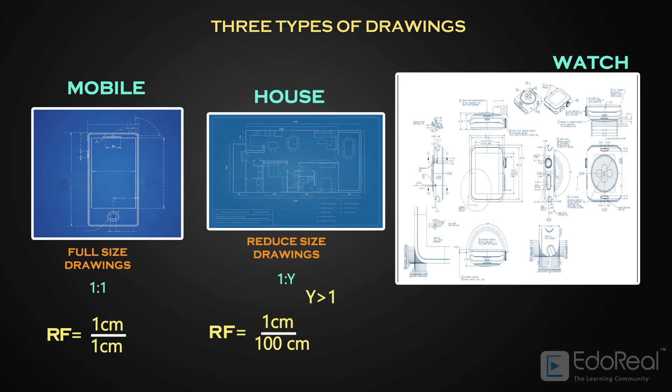If drawings are drawn with enlarged size of the original objects, then they are called enlarged-sized drawings. For an enlarged-sized drawing, the RF is X as to 1. Here, X is greater than 1.